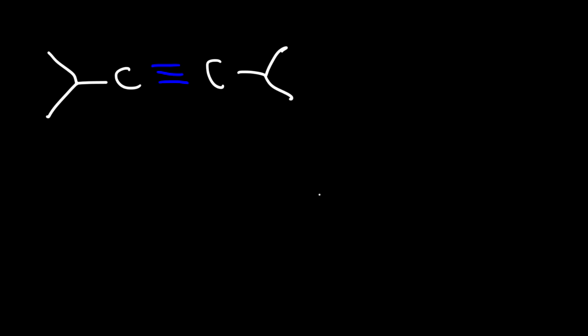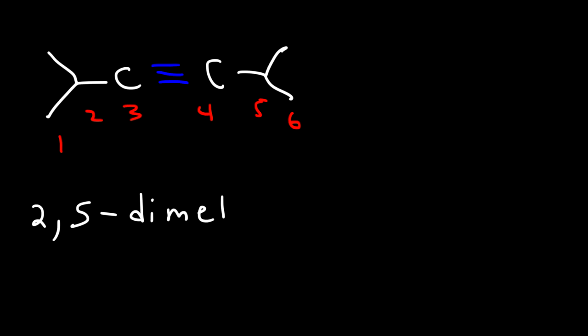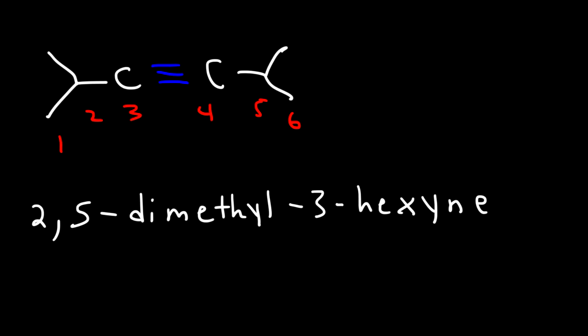Now let's work on another example. Write the common name and the IUPAC name as well. For the IUPAC name, this is carbon 1, 2, 3, 4, 5, 6. We have a methyl on carbons 2 and 5, so it's going to be 2,5-dimethyl. For 6 carbons that's hexane, but we're going to use hexyne. The triple bond is on carbon 3, so it's going to be 2,5-dimethyl-3-hexyne.